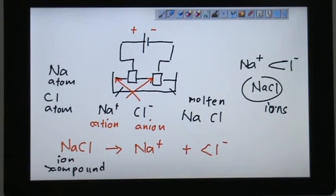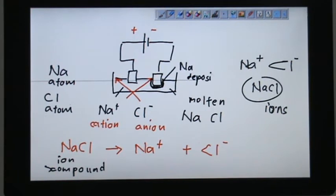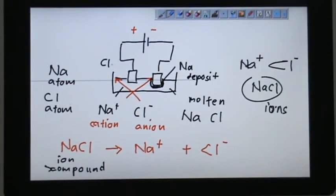What could happen is when Na+ goes here, it actually deposits itself as Na deposit. And here, Cl when it goes here, it could become a chlorine gas and release itself as gas form.